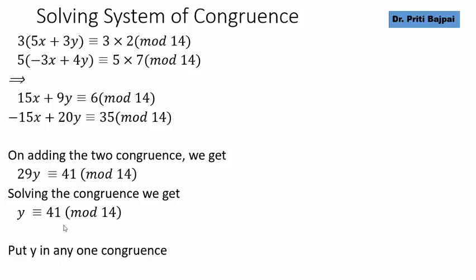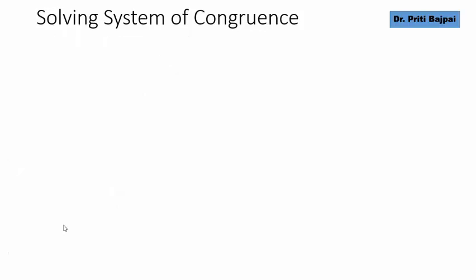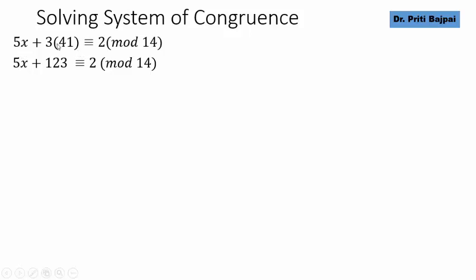This y value we take as it is, y is congruent to 41 and substitute in any one congruence. Let's say we substitute it in the first congruence. In place of y, we've put 41. We get 5x plus 123 is congruent to 2 mod 14. We will get 5x is congruent to minus 121 mod 14.